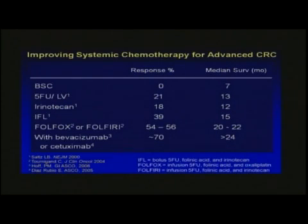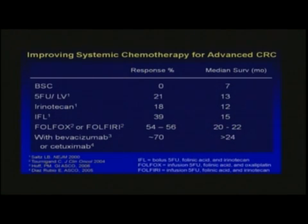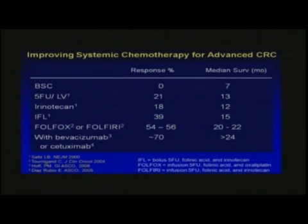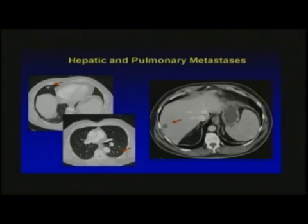We've already heard about the improvement in systemic therapies that resulted in dramatic improvements in median survival, response rates, and increasing ability to perform resections in patients with liver-only disease. We need to think about how we now manage patients with extrahepatic disease. We can also talk about how to manage the complete extrahepatic response — another area of controversy. So let's first talk about pulmonary metastases with hepatic metastases.